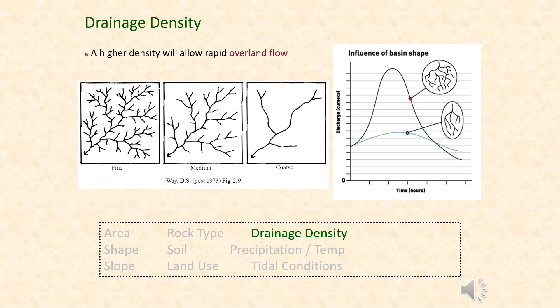Drainage density is the amount of tributaries that feed the main river channel. The larger the drainage density, the easier water can access the main channel, and therefore potentially the shorter the lag time and the higher the peak discharge. A fine drainage density has the shortest lag time and a coarse one the longest, with the high-density river showing a much flashier system than that with a lower drainage density.